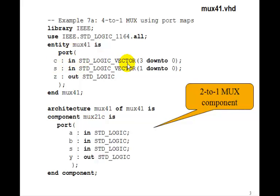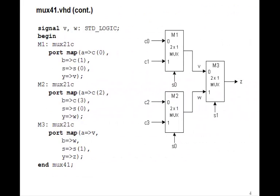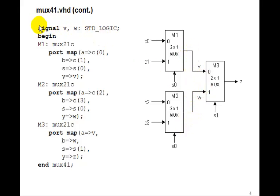The inputs are going to be c3 down to c0. s will have the two values s1 and s0, and the output will be z. We need three instances of these 2-to-1 muxes — we'll call them m1, m2, and m3. We need three port map statements. Notice we have a wire called v that connects the output of m1 to the a input of m3, and another wire called w that connects the output of m2 to the b input of m3. Anytime you have internal wires in your circuit like this, you must declare them to be signals.